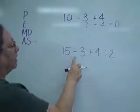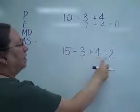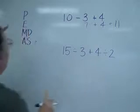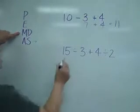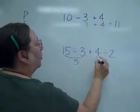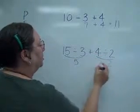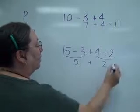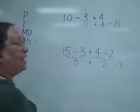Down at the bottom, I've got a bunch. I've got a division, an addition, and a division. So I'm going to have to do the divisions first. So 15 divided by 3 is 5, 4 divided by 2 is 2, and then I can come over and add the answers.